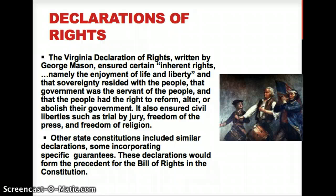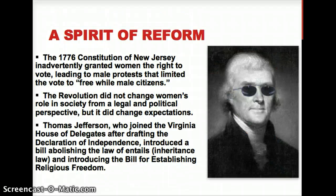Mason ensured civil liberties such as trial by jury, freedom of the press, freedom of religion, speedy trial, and no cruel and unusual punishment — all the basic Enlightenment ideals. Other state constitutions did similar things, some with very specific delineations of basic rights, others more broad. Eventually, these are going to become our Bill of Rights in the Constitution when we get rid of the Articles of Confederation.